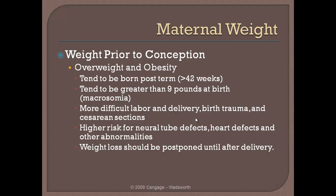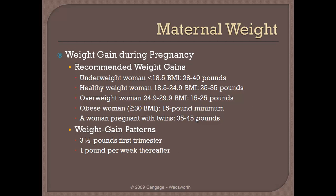There are higher risks for neural tube defects, heart defects, and other abnormalities in babies born to overweight mothers. A good rule of thumb is that a woman of healthy weight should gain about 25 to 30 pounds during pregnancy. However, if she is already overweight, increased fat stores are not needed, and somewhere between 15 to 25 pounds would be appropriate for a woman who is overweight at conception.